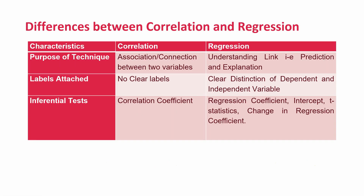However, there are differences between correlation and regression in their purpose, labeling of variables, and the kind of inferential tests applied. In correlation, you are looking for association or connection between two variables, whereas in regression you are understanding a link, that is prediction and explanation. There are no labels in correlation, whereas in regression there is a clear distinction between the dependent and independent variable. In correlation it is the correlation coefficient that is used to assess strength, but in regression it is the regression coefficient, the intercept, and the t-statistics.